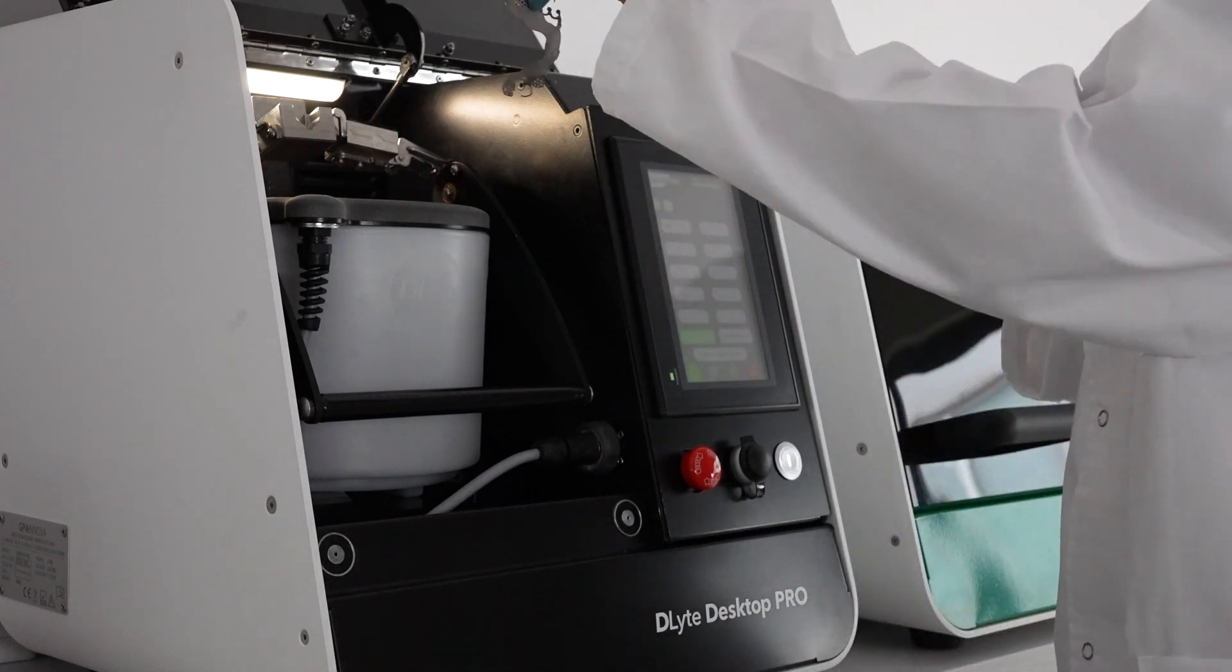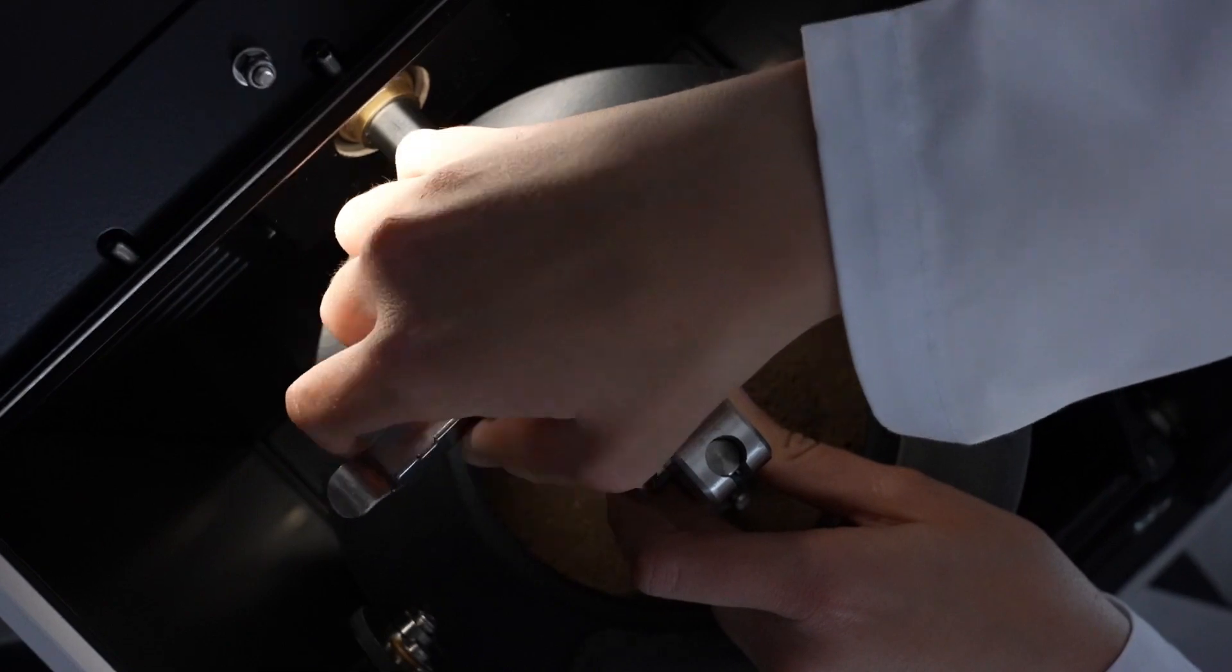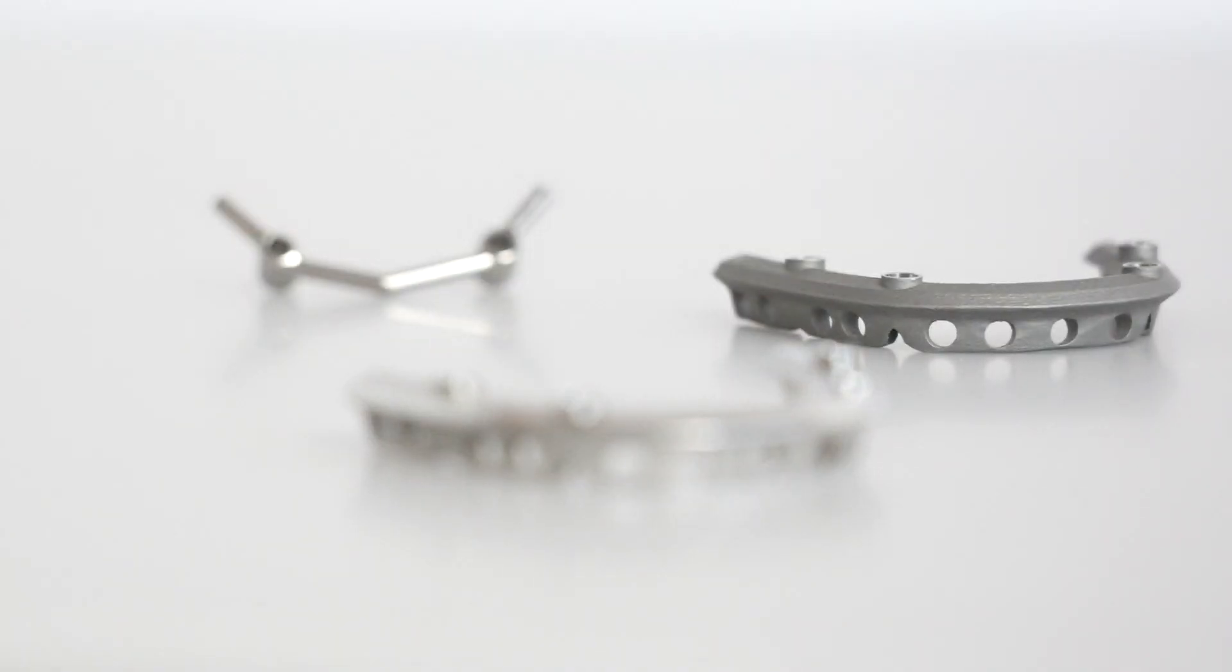And D-Lite Desktop Pro, designed for the treatment of a wider variety of materials such as cobalt chrome, titanium, stainless steel, aluminum, copper, and nickel to meet all of your production needs.